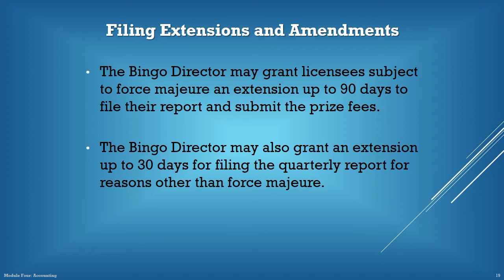If a natural disaster occurs and the organization is unable to submit the quarterly report to the commission by the due date, an extension request must be timely filed. The director may grant an extension of up to 90 days to file the quarterly report or pay prize fees. To be considered for an extension due to natural disaster, the county must be recognized by the Office of the Governor or Comptroller of Public Accounts. The director may also grant an extension of up to 30 days for filing the quarterly report for reasons other than a natural disaster. 90% of the prize fees must be received by the commission, postmarked on or before the due date of the report.